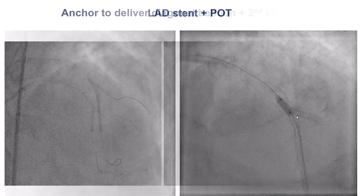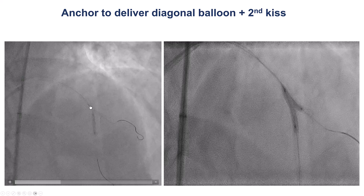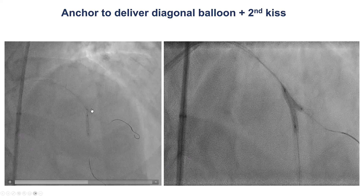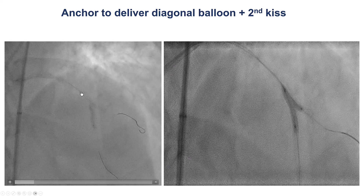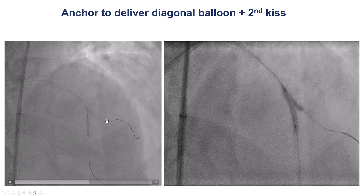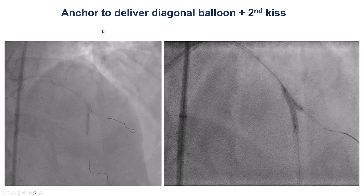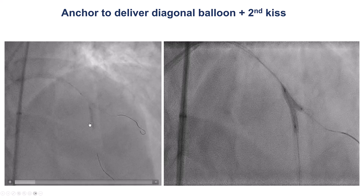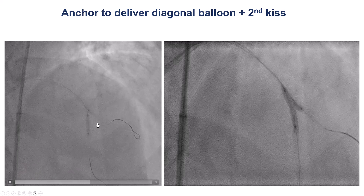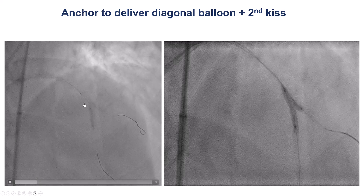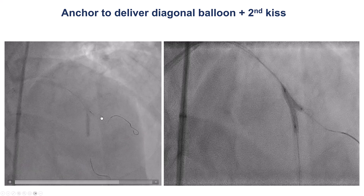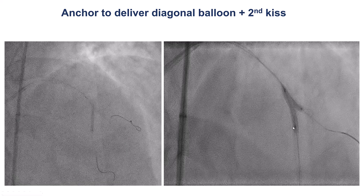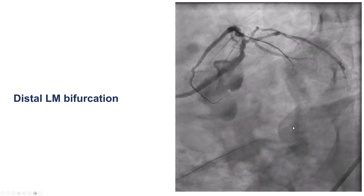We did the proximal optimization technique. We had some difficulty with rewiring, but eventually it was successful. We also had some difficulty delivering equipment into the diagonal. By using the side branch anchor technique — a balloon inflated into the LAD — we were then able to advance equipment inside the diagonal branch and complete the second kissing balloon inflation.